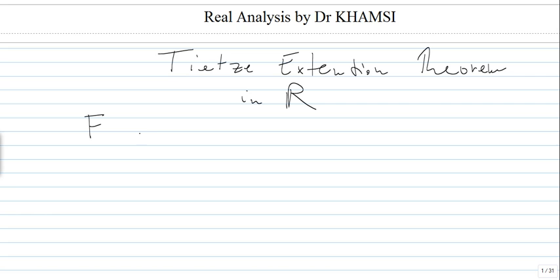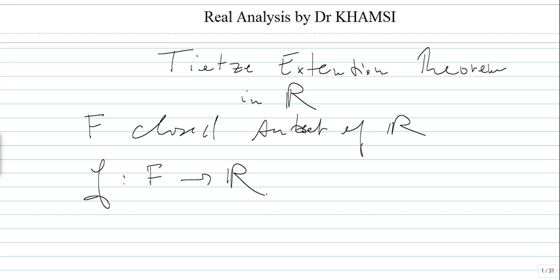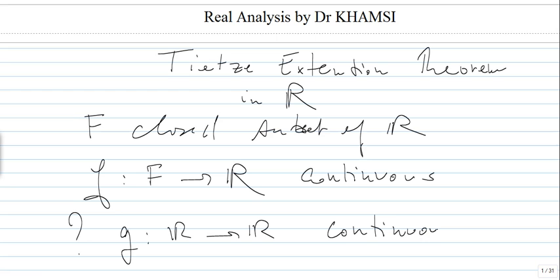So what do we have? We have F, which is a closed subset of ℝ. We have f defined from the closed subset to ℝ, which is continuous. And the question is: how do we construct a function G from ℝ to ℝ which extends F, meaning that G restricted to F is equal to f?